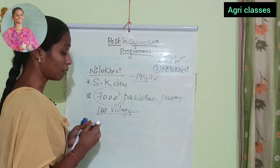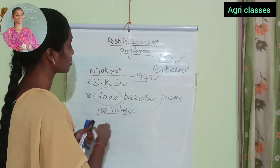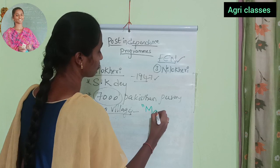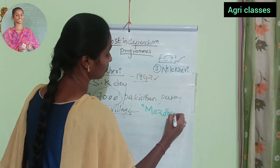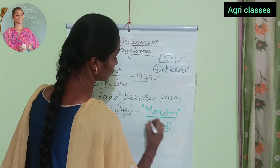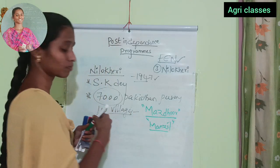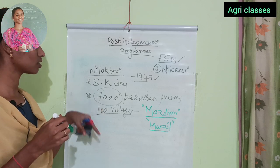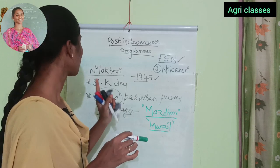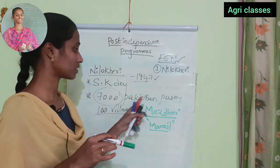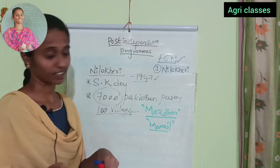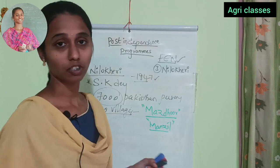The third pre-independence project is Nilo Keri. It is also known as Mazdur Manjil. The concern person is S.K. Dey. This project started in 1947 with 7,000 members in Pakistan across 1,000 villages, who were relocated and rehabilitated to another place.